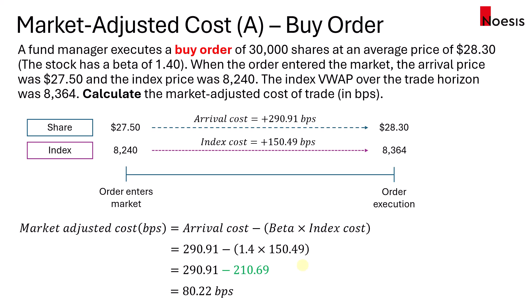Now, if beta times the index cost is large enough, the market adjusted cost can even become a negative number, which would be a good thing. It tells us that the trader would have even outperformed if the index cost was large enough.